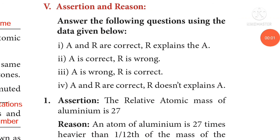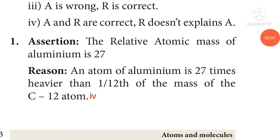Assertion and reason. Assertion: The relative atomic mass of aluminium is 27. Reason: An atom of aluminium is 27 times heavier than 1/12th of the mass of the carbon-12 atom. Here A and R are correct. R does not explain A.